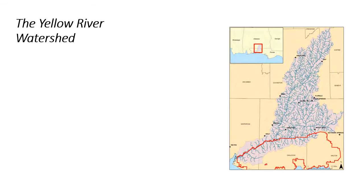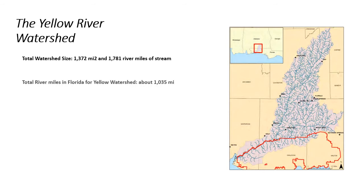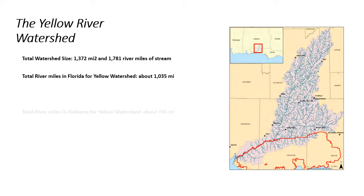Before we walk through the next sections on the different classifications of rivers and the river continuum concept and other pertinent terminology, I want to provide an example watershed that is close to my heart — the Yellow River Watershed. Around 10 years ago, when I was a river restoration intern for the Nature Conservancy, I participated in a watershed-wide assessment using U.S. Fish and Wildlife's Riverine Threats Assessment Protocol and Rosgen's methodology.